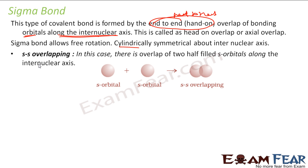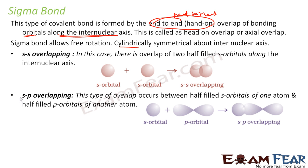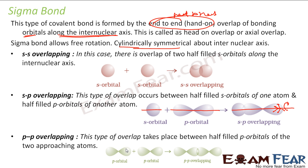The sigma bond is of three types: SS overlap, SP overlap, and PP overlap. If I have two S orbitals overlapping head-on, that is SS overlap. If I have an S orbital and a P orbital overlapping head-on, that is SP overlap. For PP overlap, two P orbitals overlap head-on. In all these cases, this is cylindrically symmetric about the internuclear axis — if you take any point, it will all be symmetric.